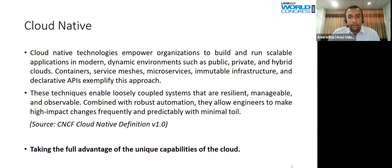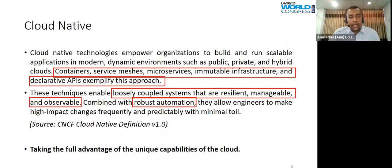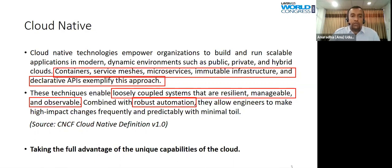Then we have cloud native, which is defined by CNCF — the Cloud Native Computing Foundation — which uses several key terms: containerized services, microservices, immutable infrastructure, and declarative APIs. It also involves loosely coupled systems that are resilient, manageable, and observable, with robust automation. To simplify: cloud native means taking full advantage of the unique capabilities of cloud.